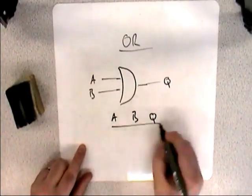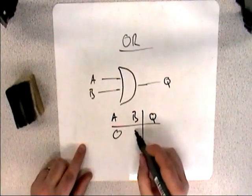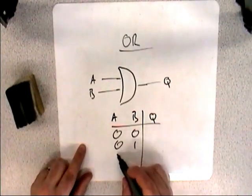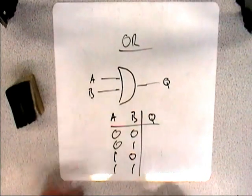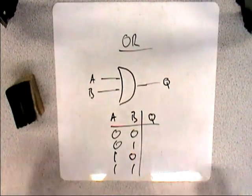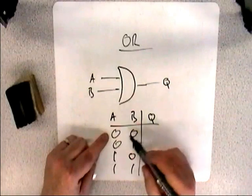There are four possible outputs, four possible cases rather. Nothing, just B, just A, both of them. And the question is, is A or B true? In the first case, it isn't. They're both false.